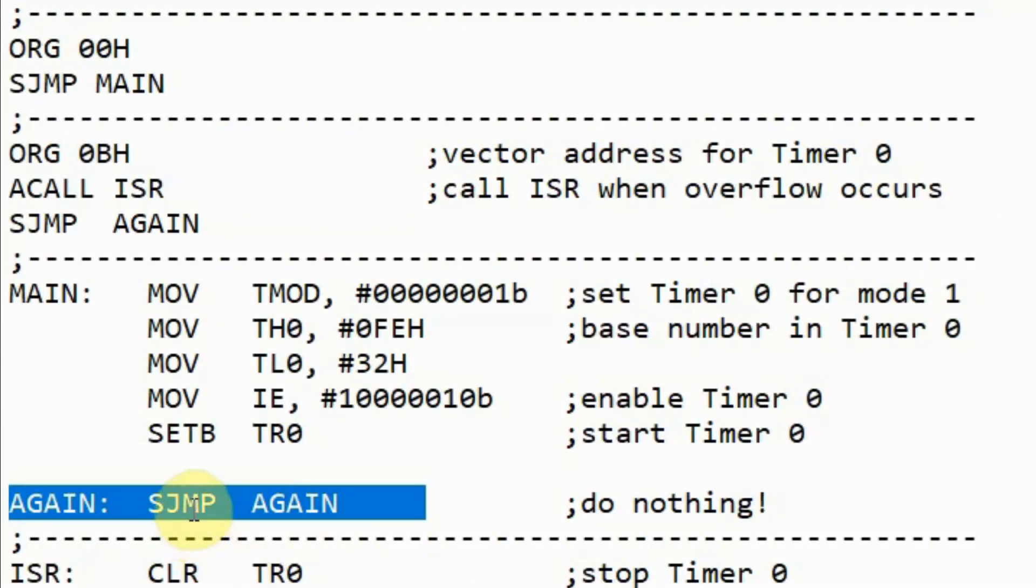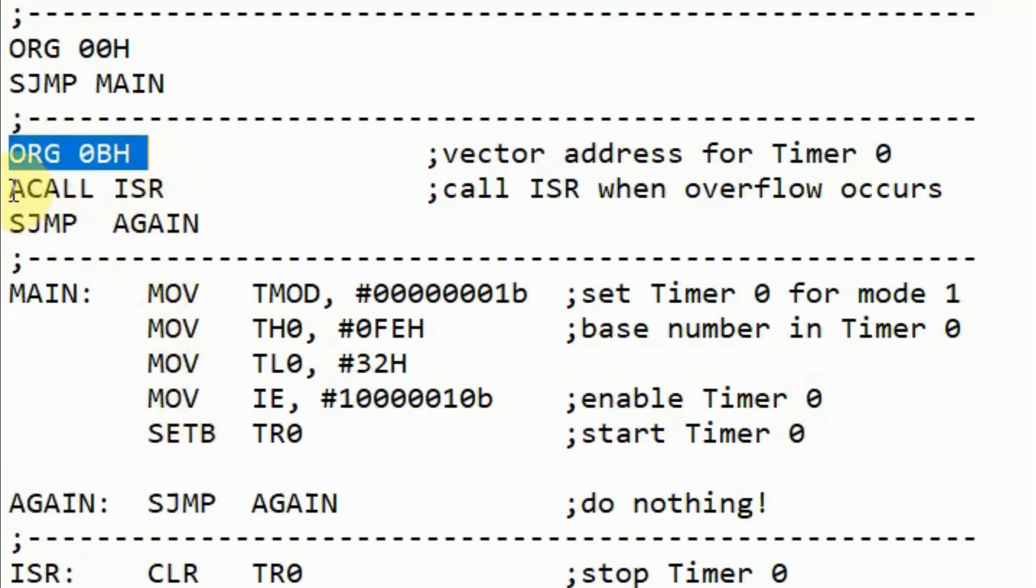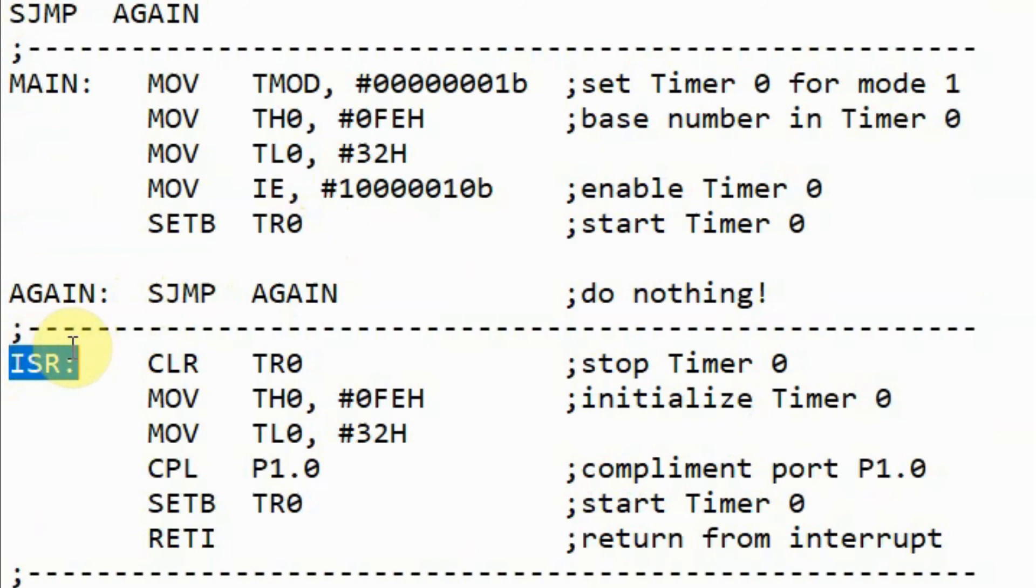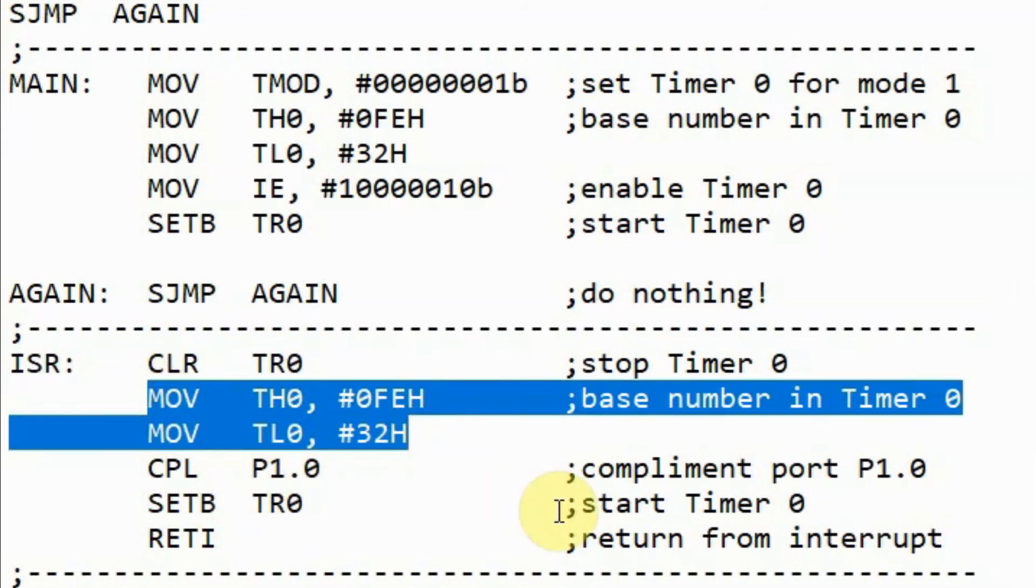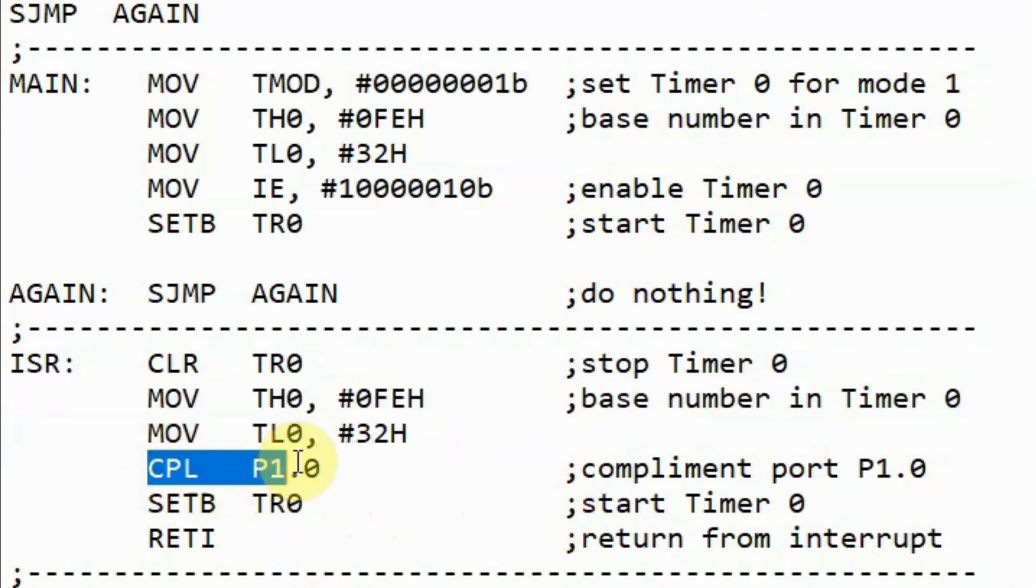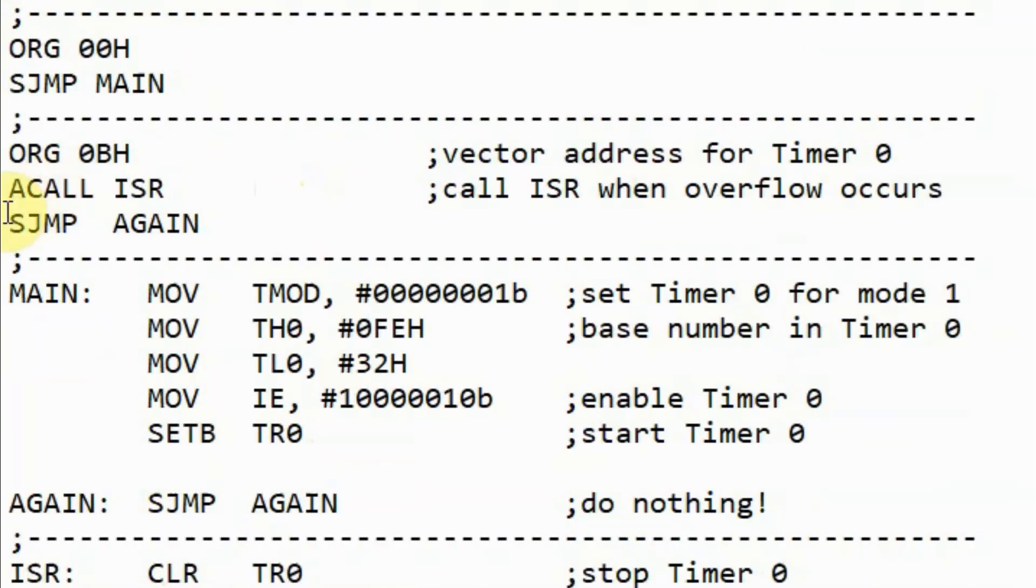During the run of the indefinite loop, when timer 0 overflow interrupt occurs, the program will jump immediately to the vector address of timer 0 which is defined here. Then we call the interrupt service routine labeled ISR. Inside the interrupt service routine, we stop timer 0 and then we store once again the base number in the registers of timer 0. Then we toggle the pin port 1.0 and start timer 0. Then we return from interrupt which will come to this instruction here which is a jump instruction to label again, which is back to the indefinite loop and the process is repeated.